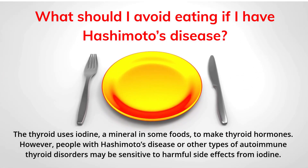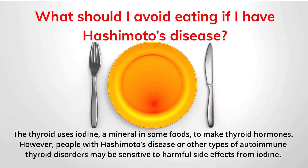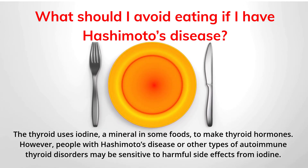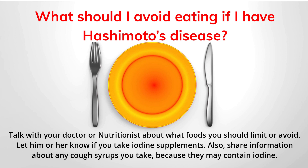What should I avoid eating if I have Hashimoto's disease? The thyroid uses iodine, a mineral in some foods, to make thyroid hormones. However, people with Hashimoto's disease or other types of autoimmune thyroid disorders may be sensitive to harmful side effects from iodine. Eating foods that have large amounts of iodine — such as kelp, dulse, or other kinds of seaweed — may cause hypothyroidism or make it worse. Taking iodine supplements can have the same effect. Talk with your doctor or nutritionist about what foods you should limit or avoid, and let them know if you take iodine supplements or cough syrups that may contain iodine.